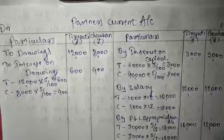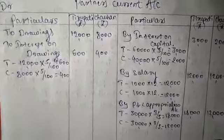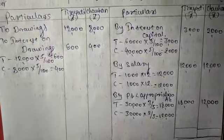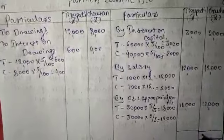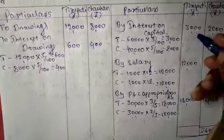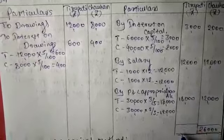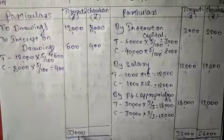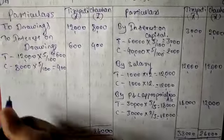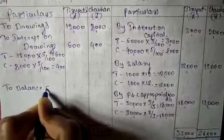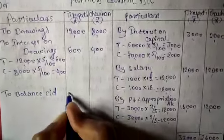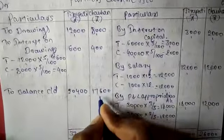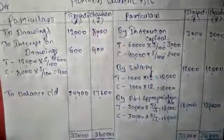These all are the adjustments entered in the partner's current account. Now close down the account. Credit side totals: Tirupati — ₹3,000 + ₹12,000 + ₹18,000 = ₹33,000; Chauhan — ₹2,000 + ₹12,000 + ₹12,000 = ₹26,000. The same totals appear on the debit side. The difference is the balance carried on: ₹20,400 for Tirupati and ₹17,600 for Chauhan. These are the closing capital balances.